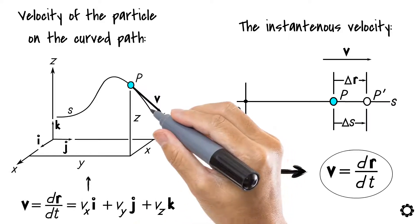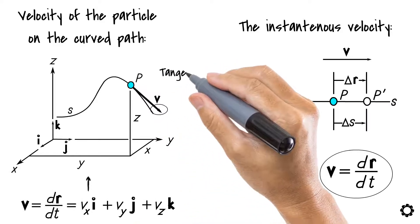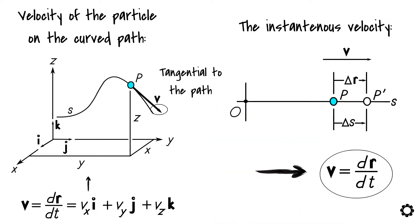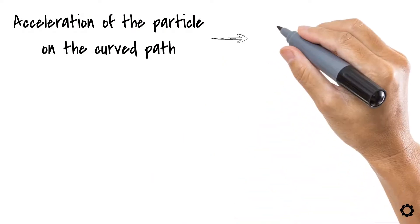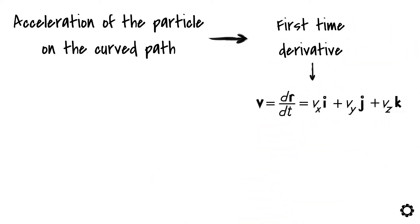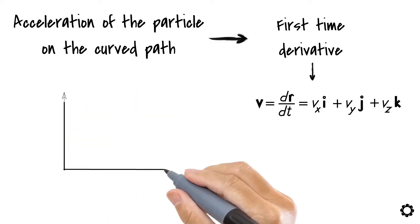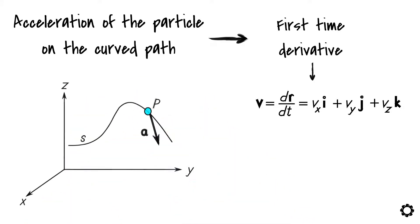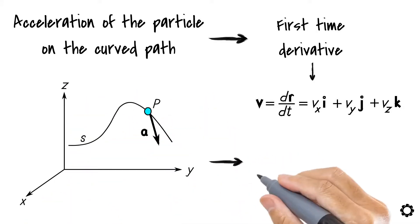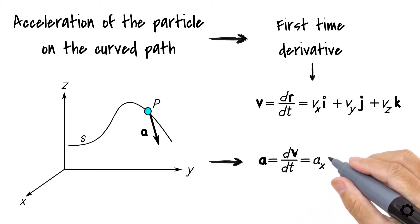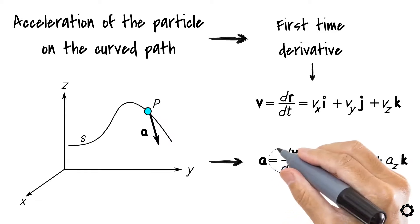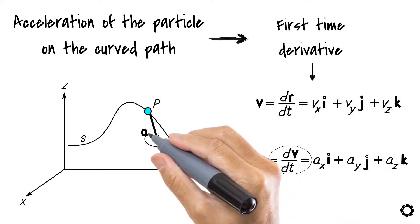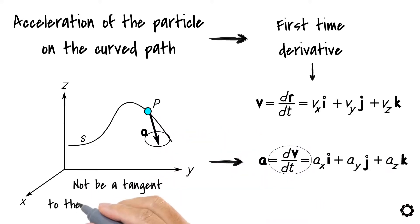As you can see, the direction of the velocity vector is always tangential to the path of the particle. Finally, we can obtain the acceleration of the particle on the curved path by taking the first time derivative of the velocity equation. Thus, the acceleration can be determined as follows: a equals dv by dt equals ax·i plus ay·j plus az·k. Notice that since acceleration a represents the time rate of change in velocity, the acceleration vector will not be a tangent to the path of the particle.